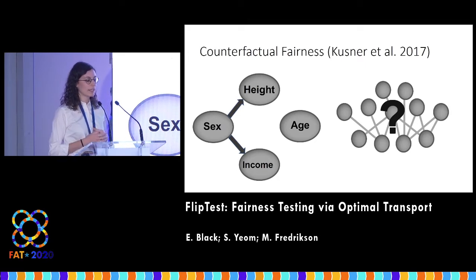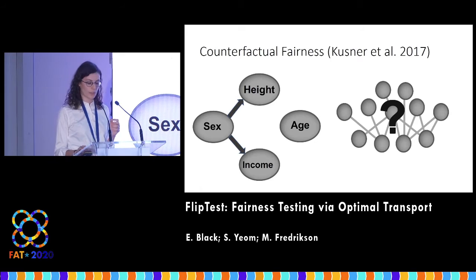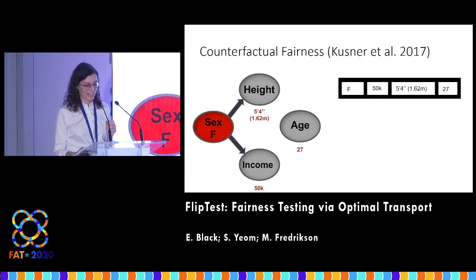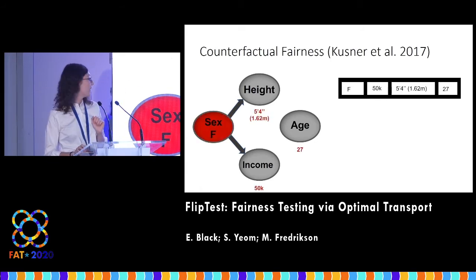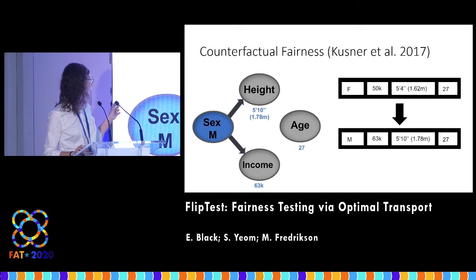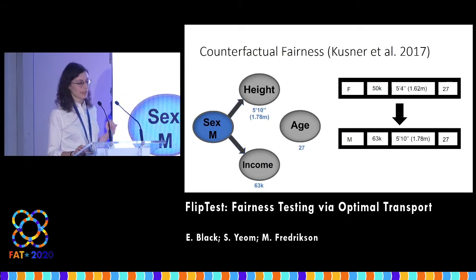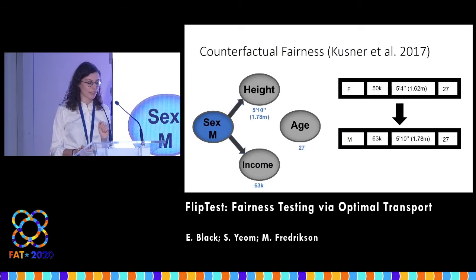We might decide there is a causal relationship between sex and height, and sex and income, but maybe not age. Then we would essentially intervene on the feature vector, using the relationships we've decided upon to create a more accurate version of the male version of me.